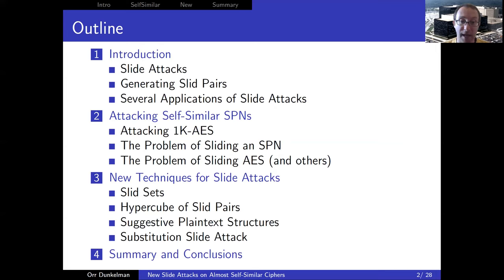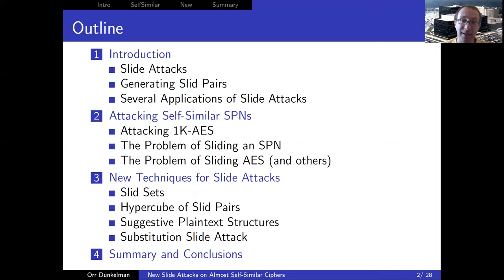Specifically for the case of 1K AES, we're able to attack it using 2^(n/2) known plaintexts — meaning we need one slide pair for the attack to work — but using 2^(3n/4) time, which is significantly better than the trivial approach of trying all 2^n pairs to see which of them is indeed a slide pair.